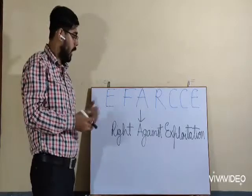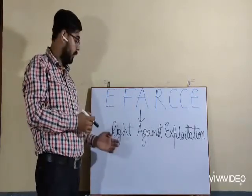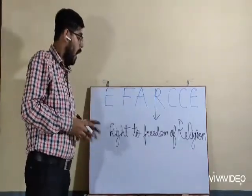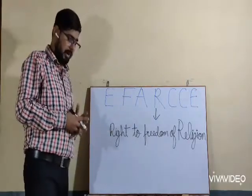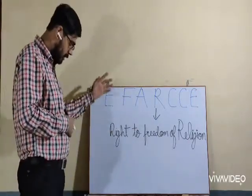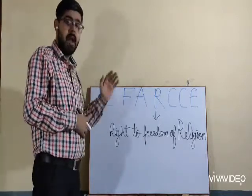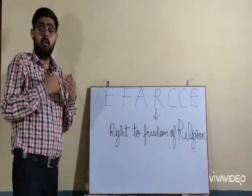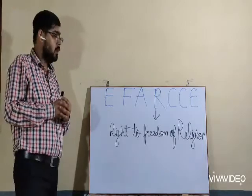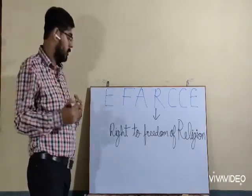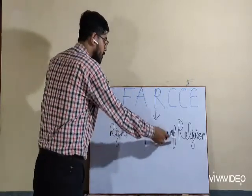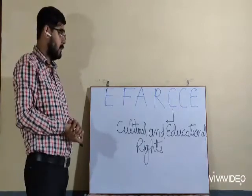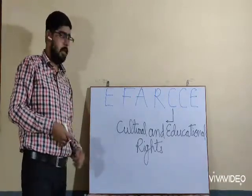F stands for right to freedom. R stands for right against exploitation — exploitation in the sense of human trafficking, child labor, and other types of exploitation. I stands for right to freedom of religion, meaning all persons are entitled to freedom of conscience and the right to practice, propagate, and pray in their own religion in their own way.